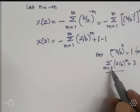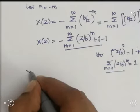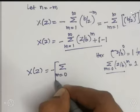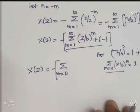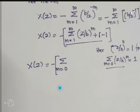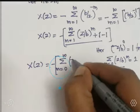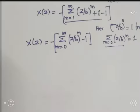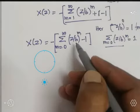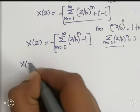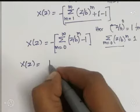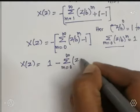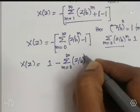Therefore X(Z) = minus × [summation from M = 0 to ∞ of (Z/B)^M − 1]. Multiplying minus through the bracket gives: X(Z) = 1 − summation from M = 0 to ∞ of (Z/B)^M.